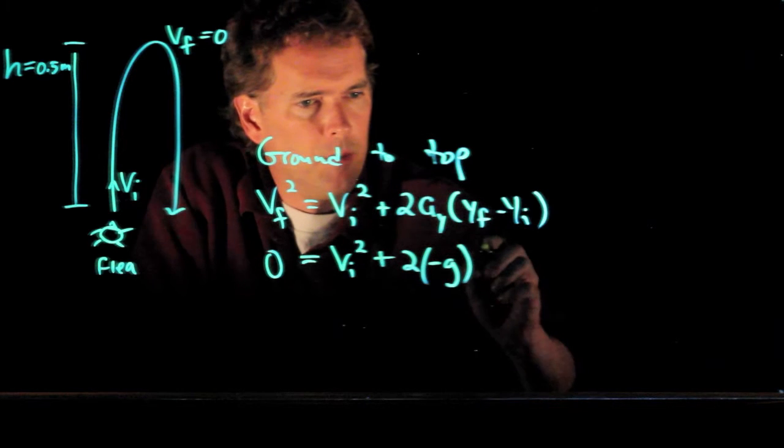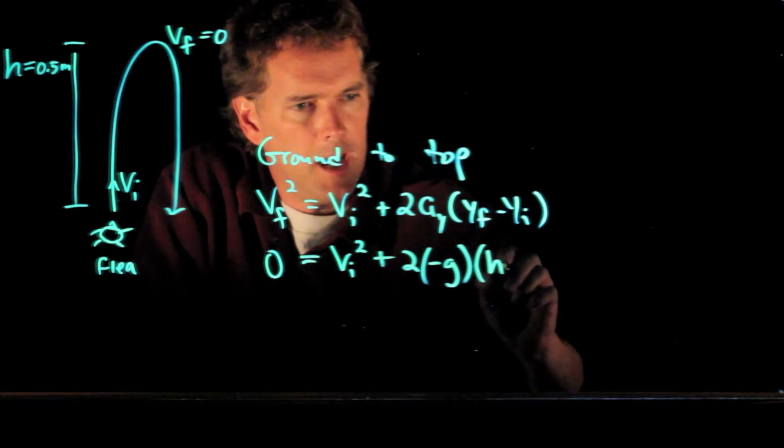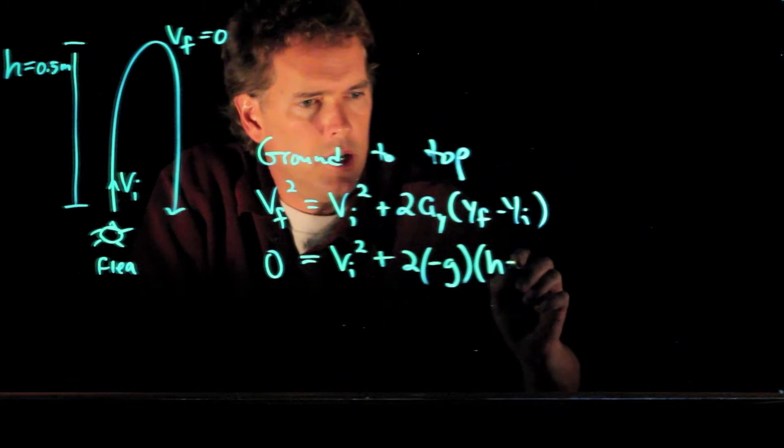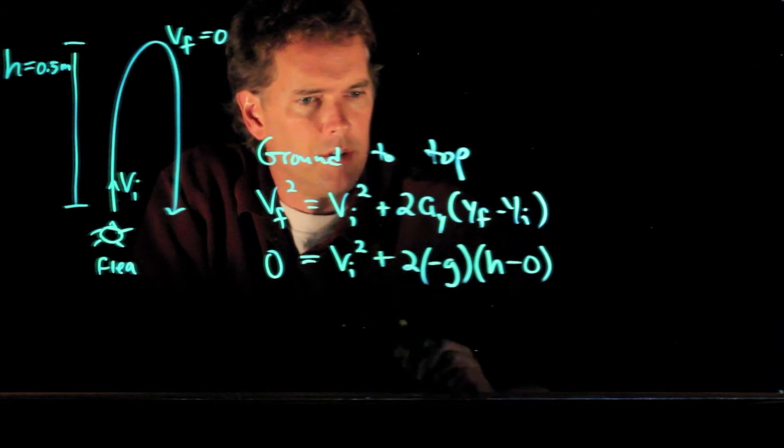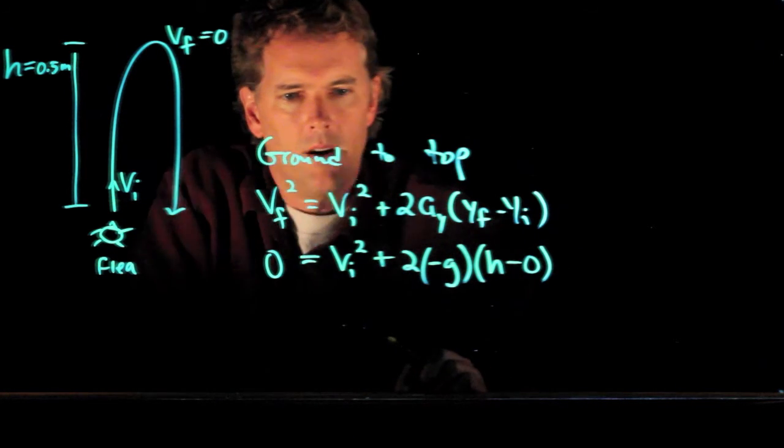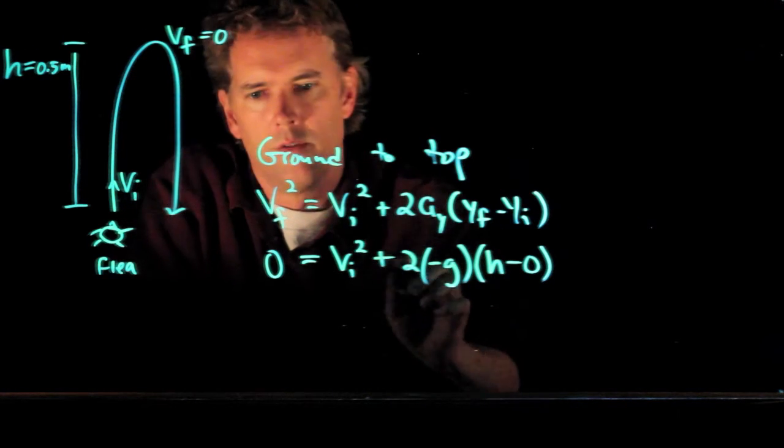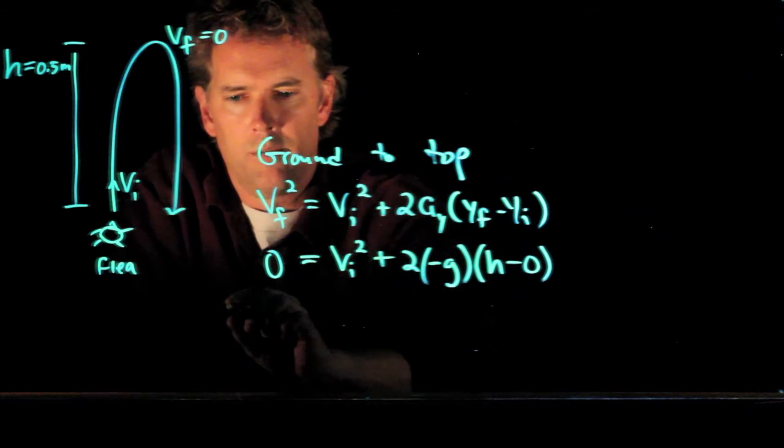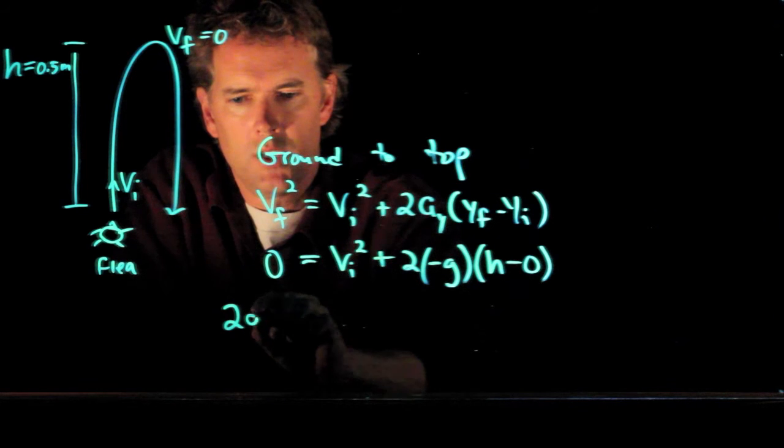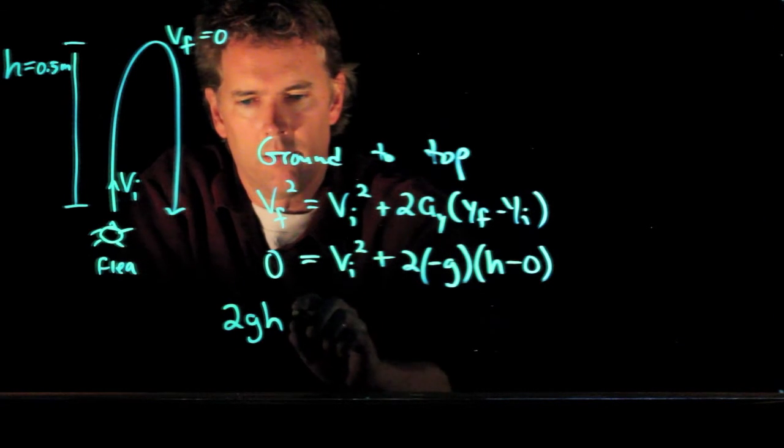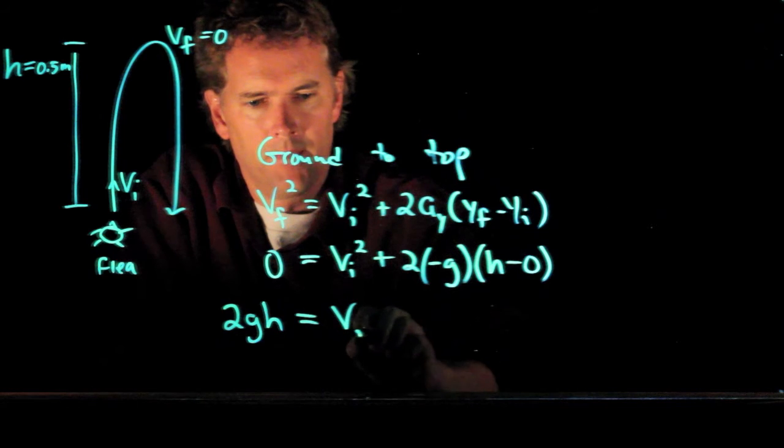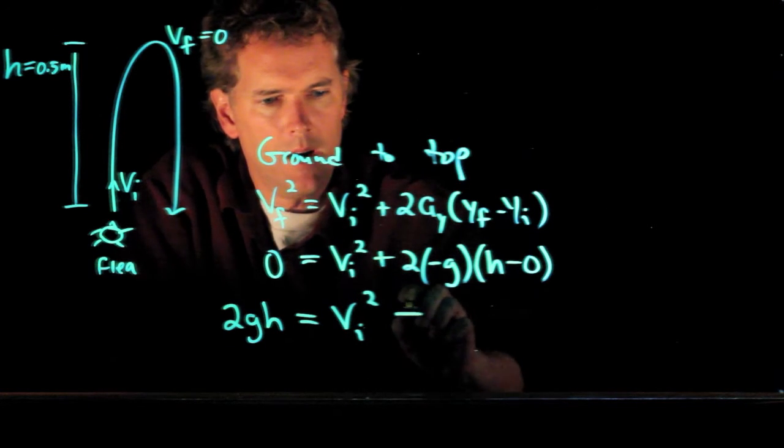And now we have YF, which is H and Y initial, which is zero. All right. So we can move this stuff over to the other side. We've got 2GH. When I add it to the other side, it becomes a positive negative. Equals VI squared.